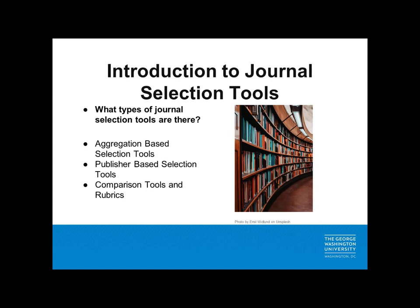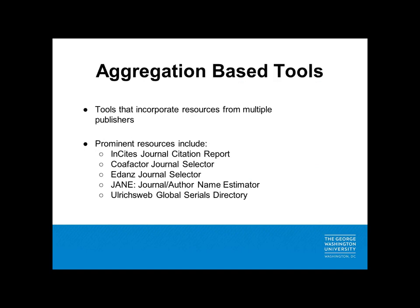What's important to remember about these resources is that it's always necessary to consider the scope of the tool. Always ask yourself what journals are actually being included in a given search. It's helpful to remember that using a variety of journal search tools will yield the most comprehensive list of potential journals. Let's start by talking about aggregation-based journal selection tools. These tools include journals from multiple publishers and often include more titles than a publisher-based selection tool. Some of these resources are free while others require subscription access, which may be available from your university's library.